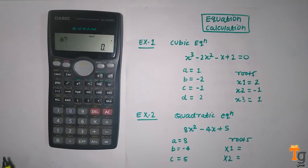We will again compare our equation with the general form, so we will find the value of a is 8, b is minus 4, c is 5. So enter the value in calculator. Value of a is 8, and then press equal.